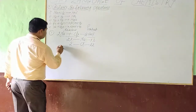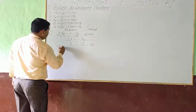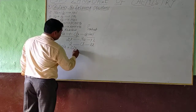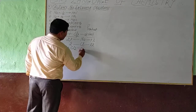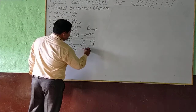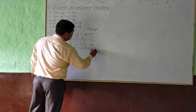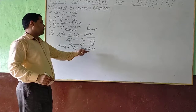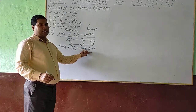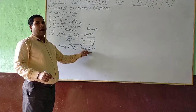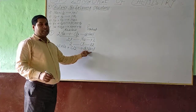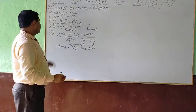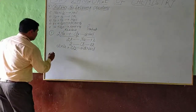We will write it out: two sodium plus Cl₂ gives two NaCl — two sodium and two chlorine on each side. The equation is balanced. I hope you understood, dear students. We will continue with question number two.